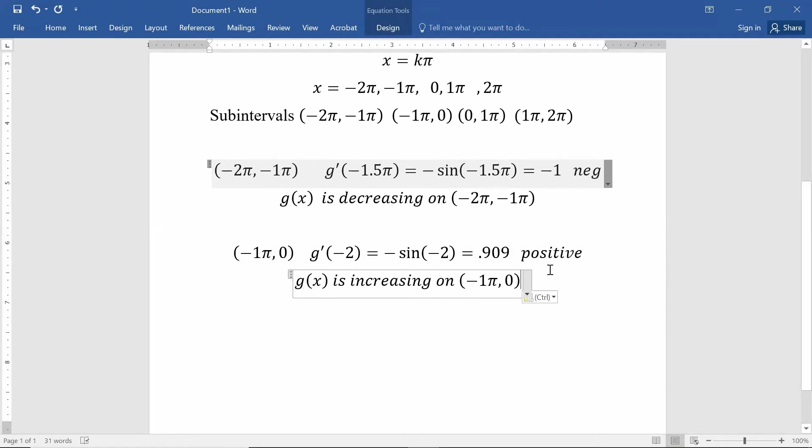I can do this for these other intervals as well. Let's go ahead and do that for the interval from 0 to 1π. Again, you can plug in any number between 0 and about 3.14. What if I just plugged in a 1? That's between 0 and about 3.14. Negative sine of 1.